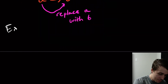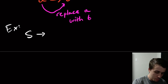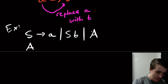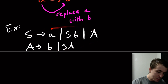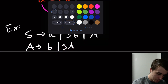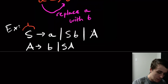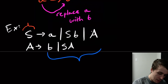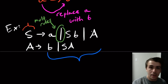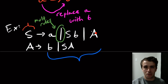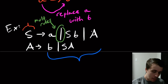Let's say we have a variable S which can produce lowercase a, or SB, or capital A. And capital A produces lowercase b, or SA. This is what a grammar looks like — stuff on the left side and stuff on the right side. The vertical bars indicate multiple rules; the left-hand side is always the same, so it's more compact to write them this way.